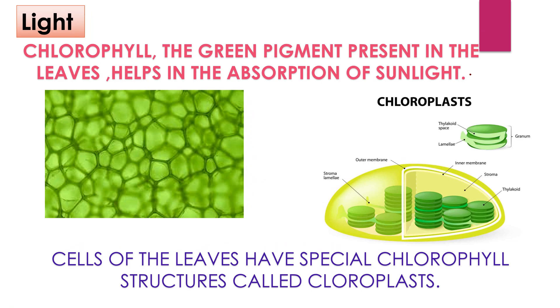Chlorophyll, the green pigment present in the leaves, helps in the absorption of sunlight. The cells of the leaves have special chlorophyll structures called chloroplast.